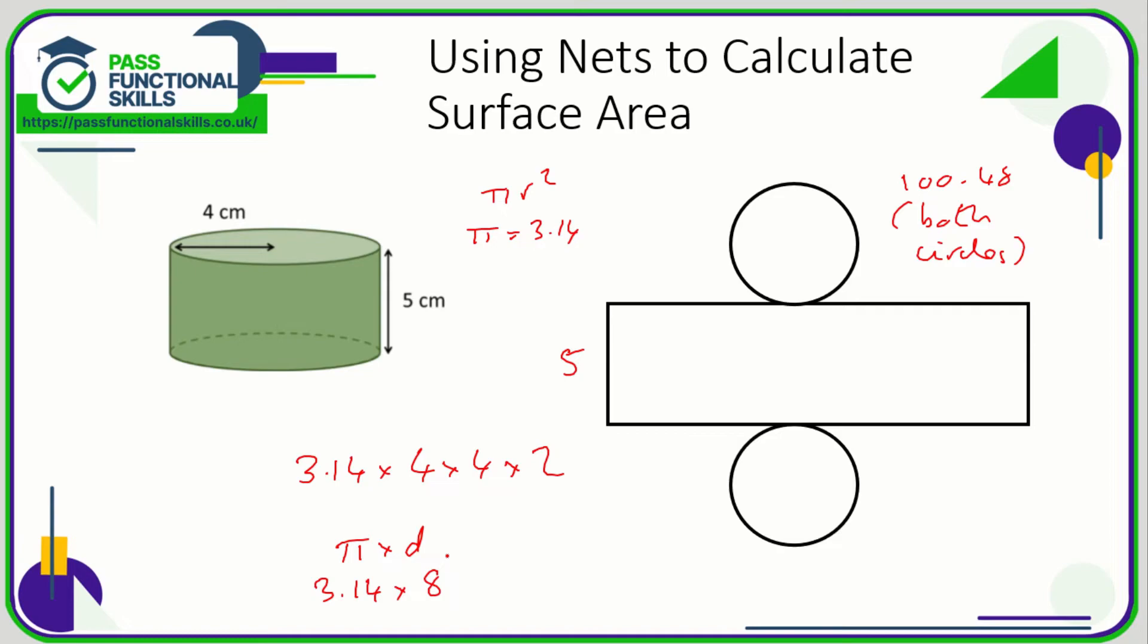And 3.14 multiplied by 8 is 25.12. So this is a rectangle 25.12 by 5, so the area of that rectangle is 25.12 multiplied by 5. The area of this rectangle is 125.6 square centimeters. Therefore, the total surface area is going to be the 125.6 plus the 100.48, and that comes to a grand total of 226.08 square centimeters.